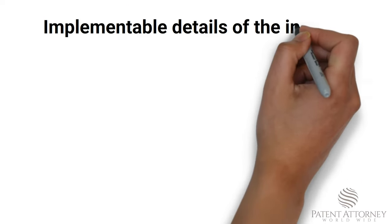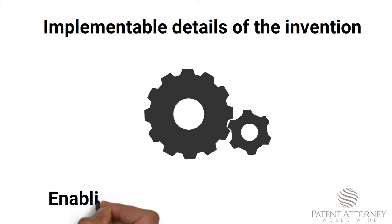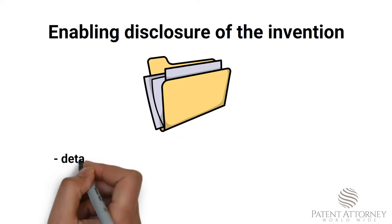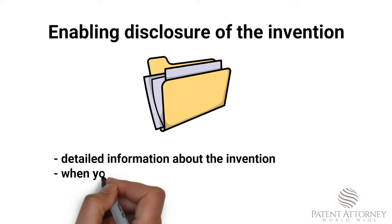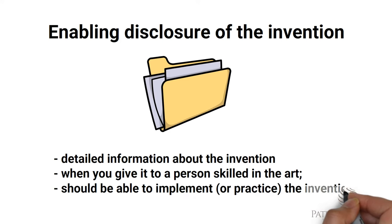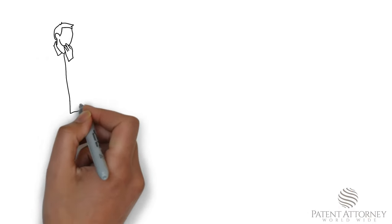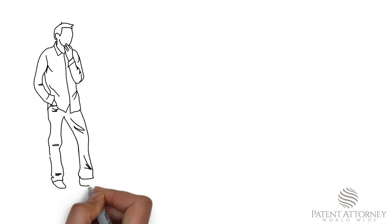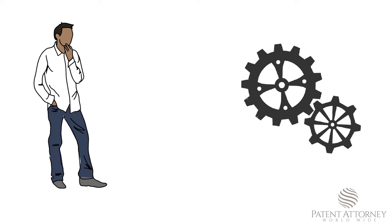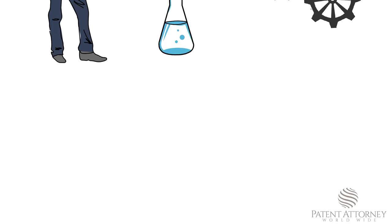We need implementable details of the invention to be able to provide an enabling disclosure. An enabling disclosure of the invention is such detailed information about your invention that when you give it to a person skilled in the art, that person should be able to implement or practice the invention without needing to perform any additional research. In simple language, we need just enough information such that a person from the same field should be able to implement the invention without any difficulty.